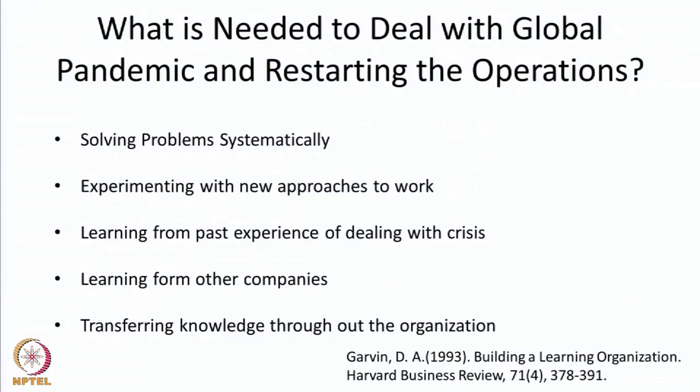These are the same points David Garvin talked about in 1993 in his famous article on building a learning organization. We also need to look at transferring knowledge throughout the organization. Some employees, especially those at the interface, may learn new processing systems faster than others. It is important for organizations to centrally identify learning points and then propagate and expand that learning throughout the organization.